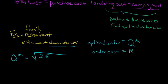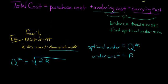But if we go back to our cost function, we've got order cost right here. So if you think of, for example, chocolate milk, you have to have the chocolate milk delivered to you.